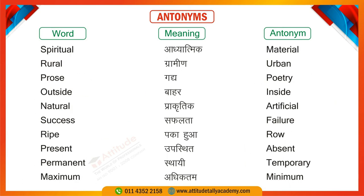Next is 'Oral,' meaning spoken, and 'Written,' meaning in written form. For example: There is an oral test and a written test. Then 'Spiritual' and 'Material.' Next is 'Rural,' meaning village or countryside areas — there are many rural areas near Delhi — and 'Urban,' meaning city areas. Then 'Prose,' meaning normal written language, and 'Poetry,' meaning verse. Next, 'Outside' and 'Inside' — for example: There is nobody outside my house, but there are many family members inside my home.